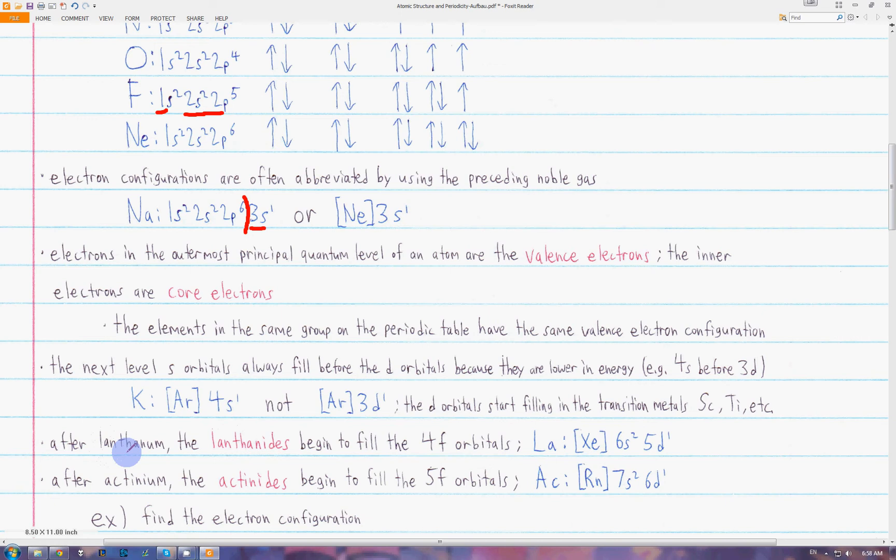Lanthanum is actually in the d section, so its electron configuration is xenon, 6s2, 5d1. Then after lanthanum, before all the other transition metals fill the d orbitals, it will switch to the lanthanides and fill all the 4f orbitals. After the 4f orbitals are filled, it goes back to the transition metals to fill the d orbitals.